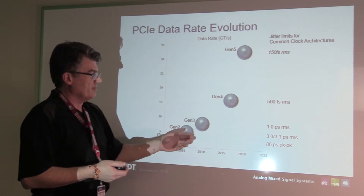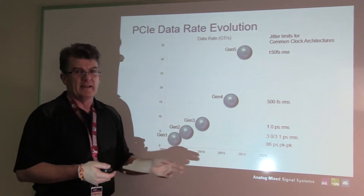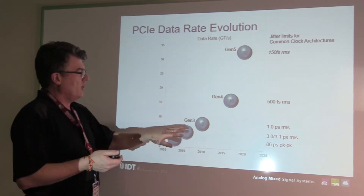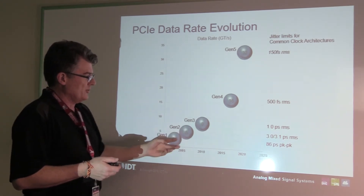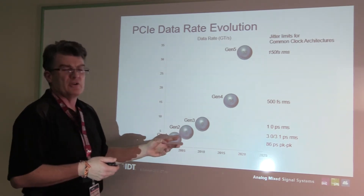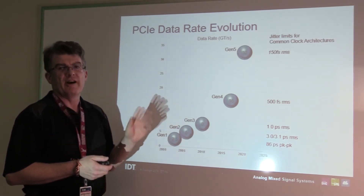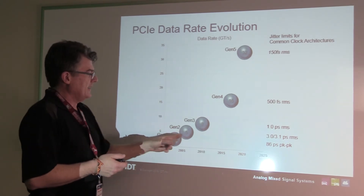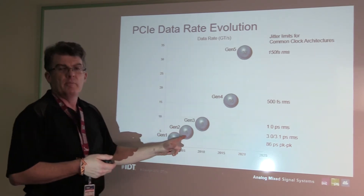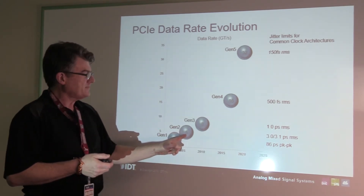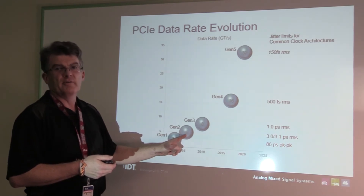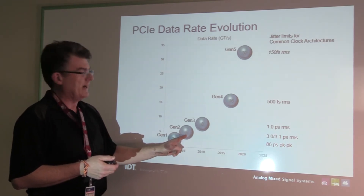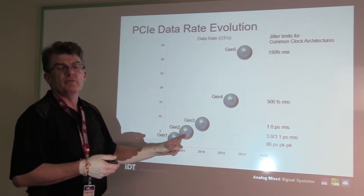Gen 3 went to 8 gig, and that does not look like a doubling. What it actually was is that the original two generations used something called 4B/5B encoding, which meant that this 5 gigabit data rate, because of the 4B/5B encoding for the error correction, only was doing 4 gigabits of data.